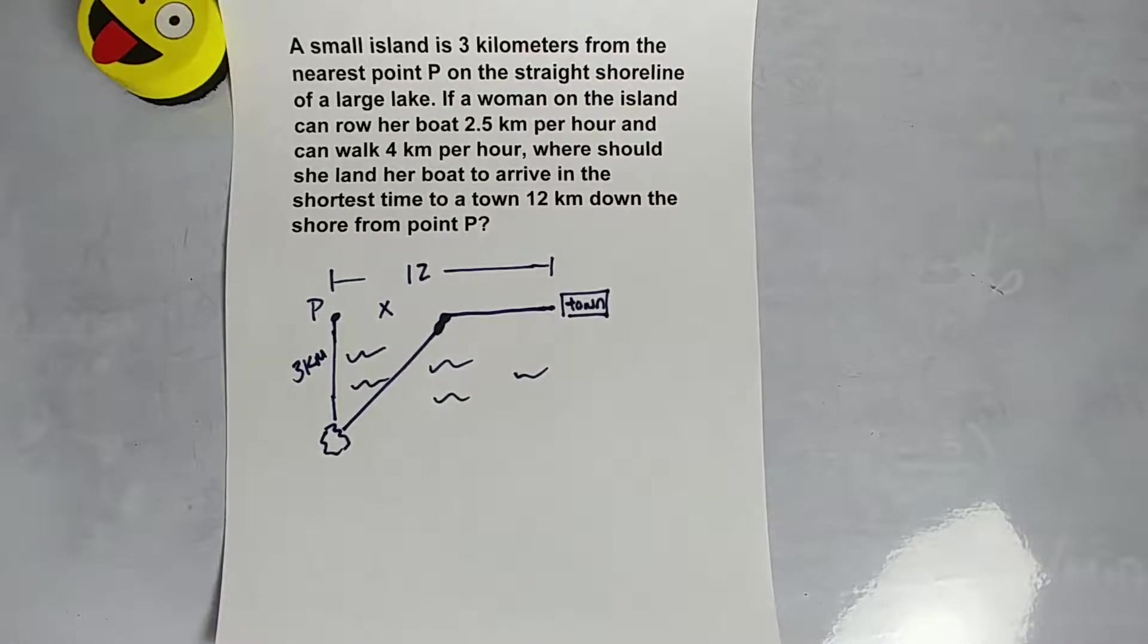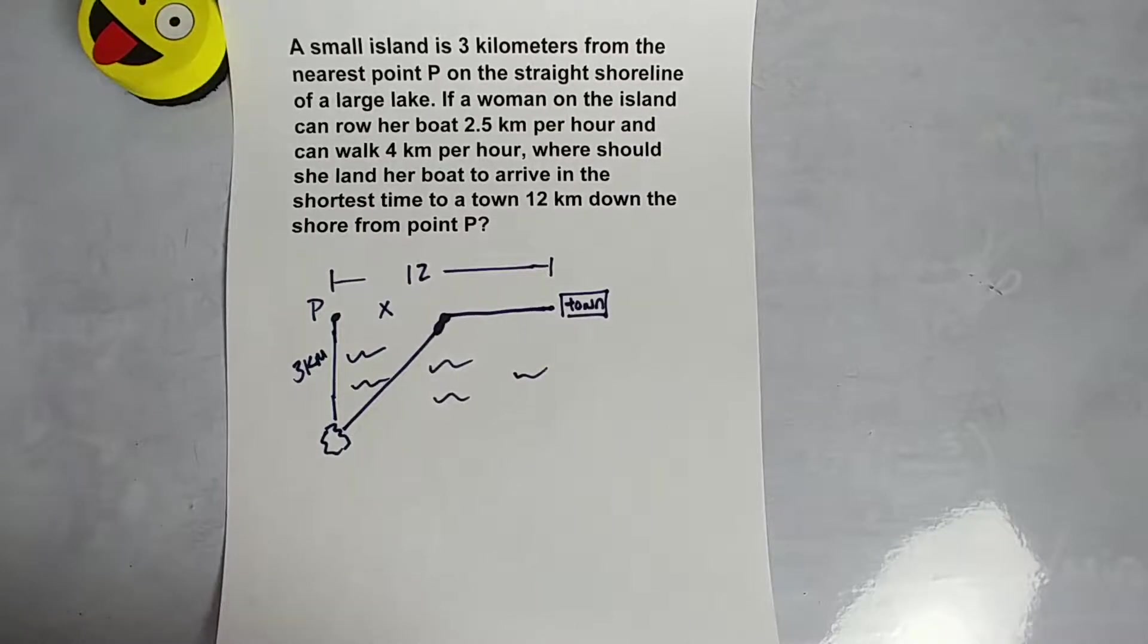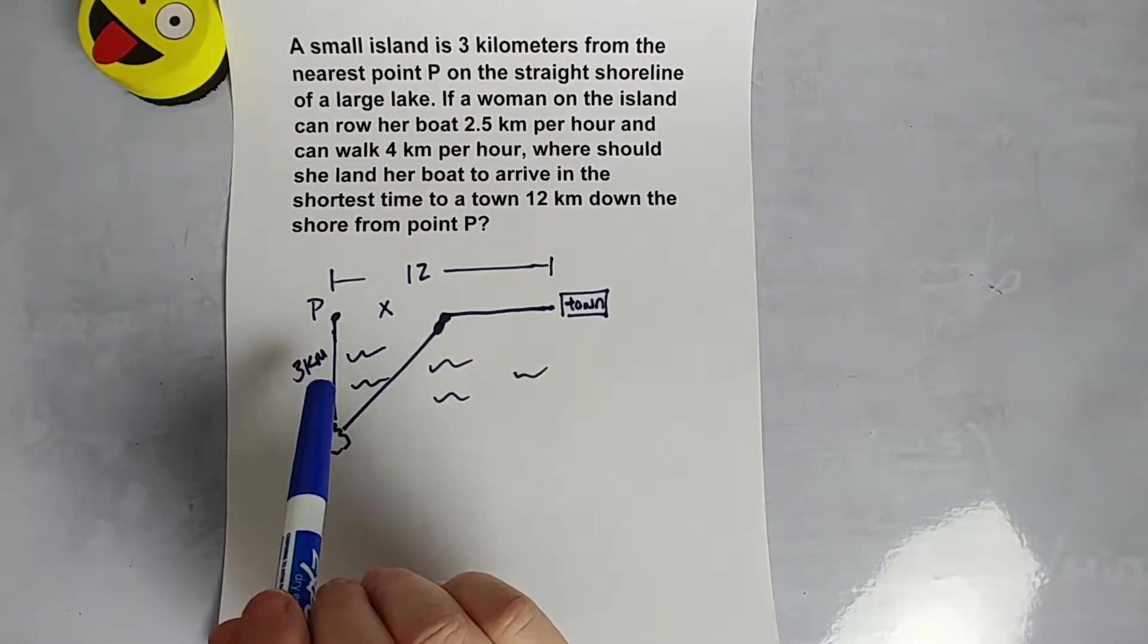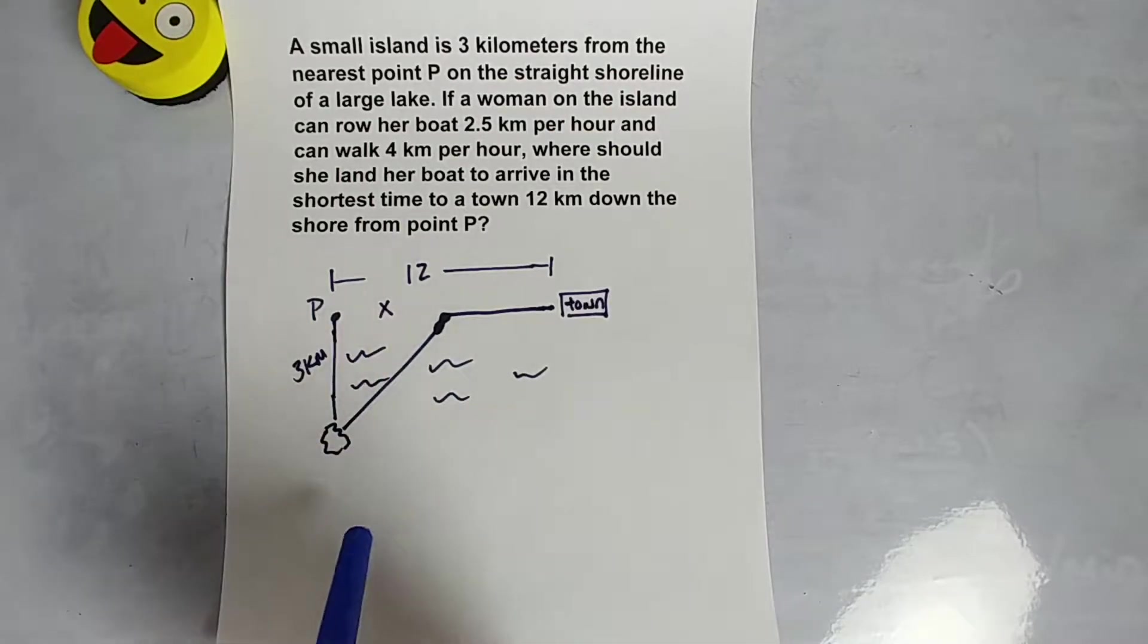Hey there, welcome to another edition of Solve My Math Homework. Okay, so today's is a calculus optimization problem. It involves being on an island and having a certain rate at which you row a boat and a certain rate at which you walk, and you want to know the optimal place to land your boat so that you can get to some place in the shortest distance. So we're going to minimize time.